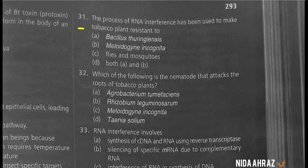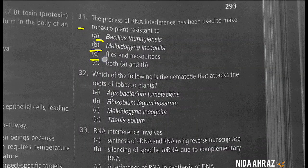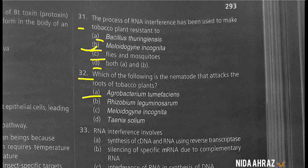RNA interference has been used to make tobacco plants resistant to Meloidogyne incognita. The correct choice is option B, Meloidogyne incognita. Meloidogyne incognita is the nematode that attacks the roots of tobacco plants; the correct choice is option C.